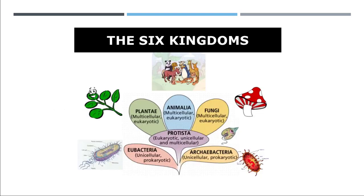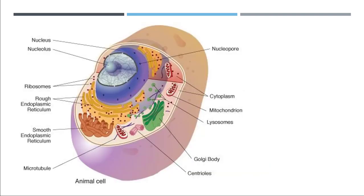If we look at the six kingdoms, eukaryotic organisms cover four different kingdoms. Eukaryotic organisms are really important to us, and understanding DNA replication in them is really important. So in this eukaryotic cell, the DNA is present within the nucleus and in mitochondria.